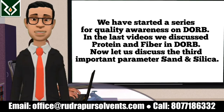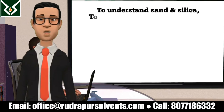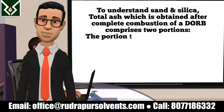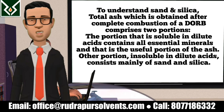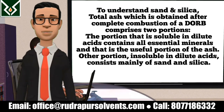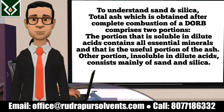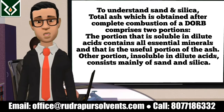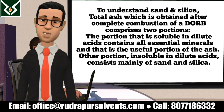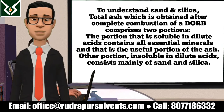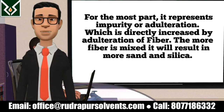Now let us discuss the third important parameter, sand and silica. To understand sand and silica, total ash which is obtained after complete combustion of a DORB comprises two portions. The portion that is soluble in dilute acids contains all essential minerals and that is the useful portion of the ash. The other portion, insoluble in dilute acids, consists mainly of sand and silica. For the most part, it represents impurity or adulteration.